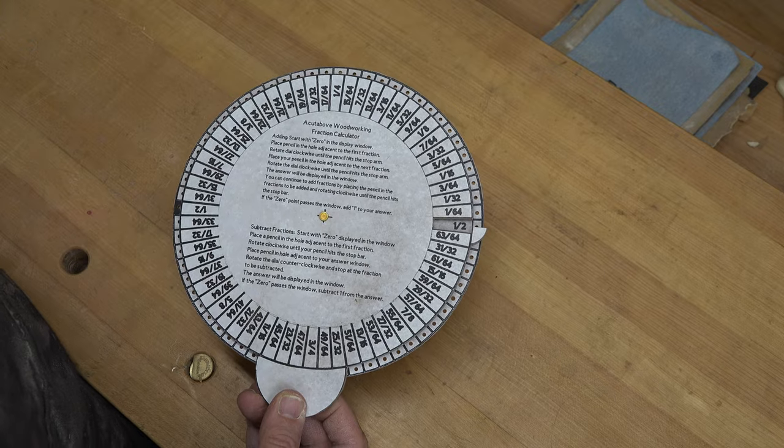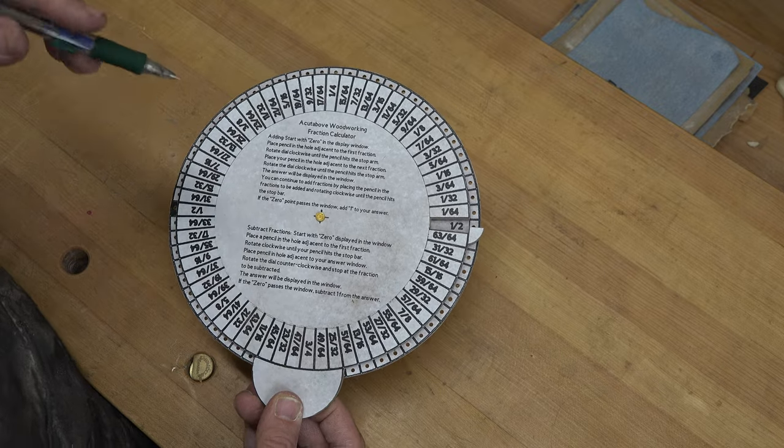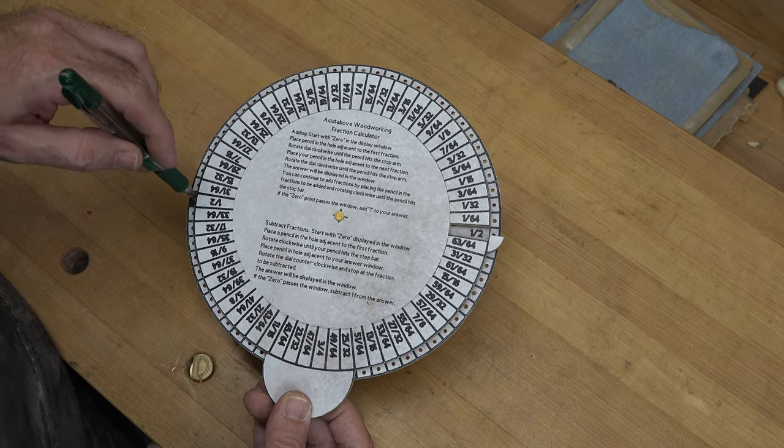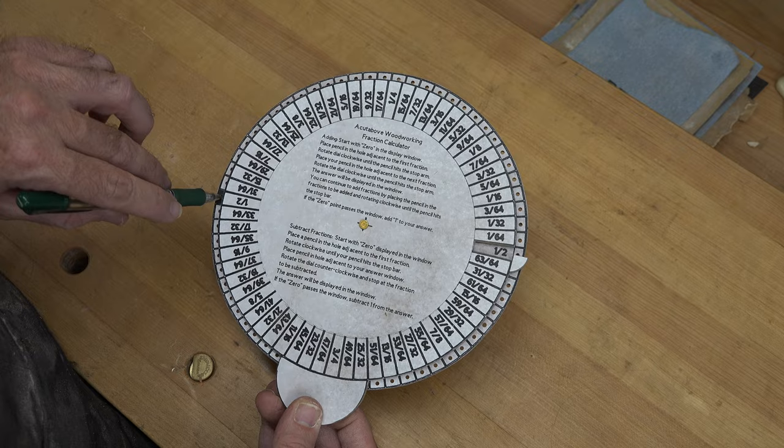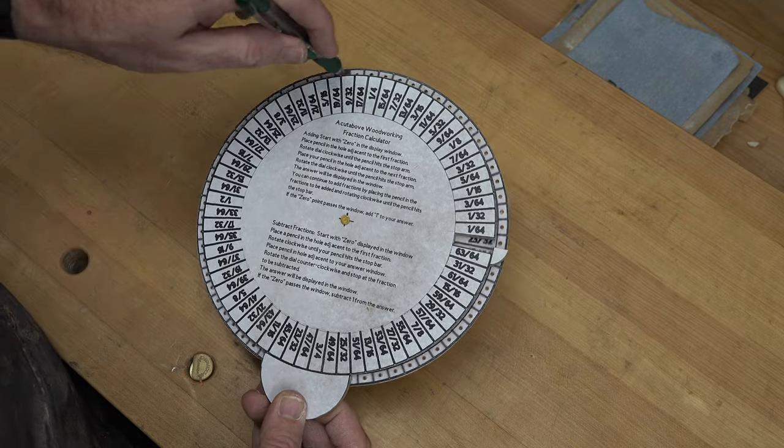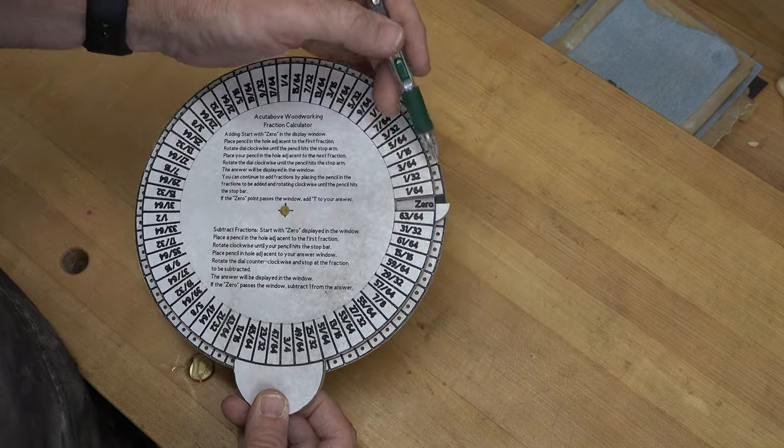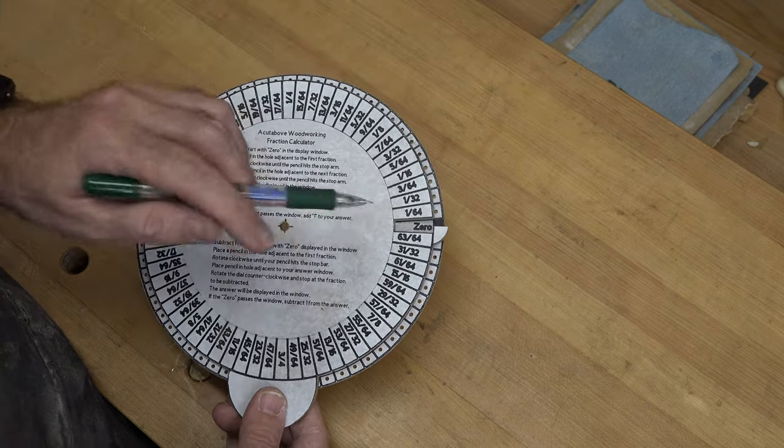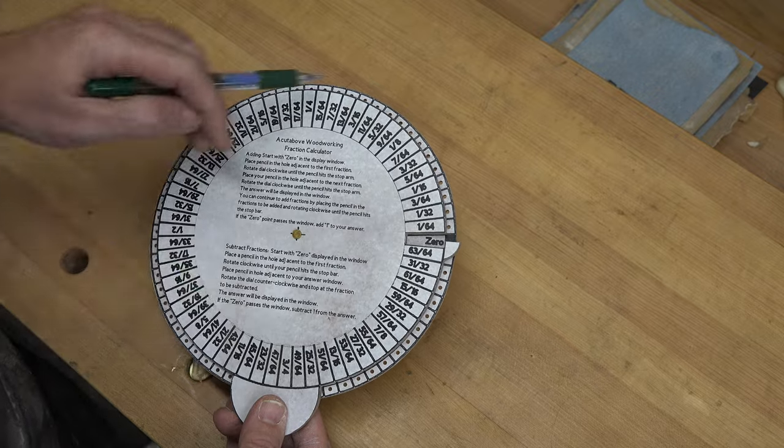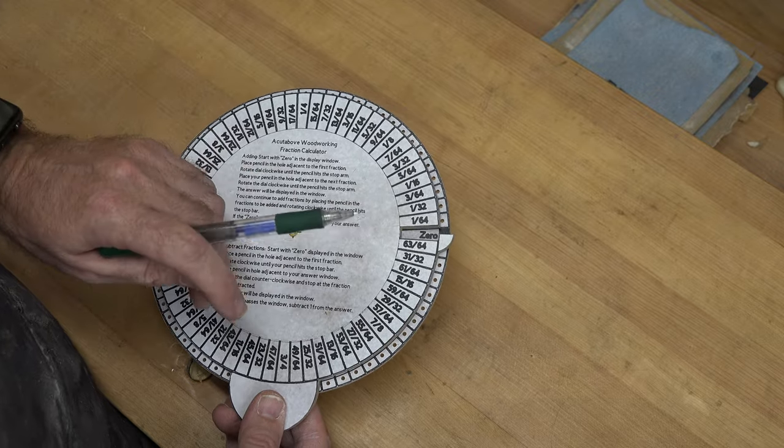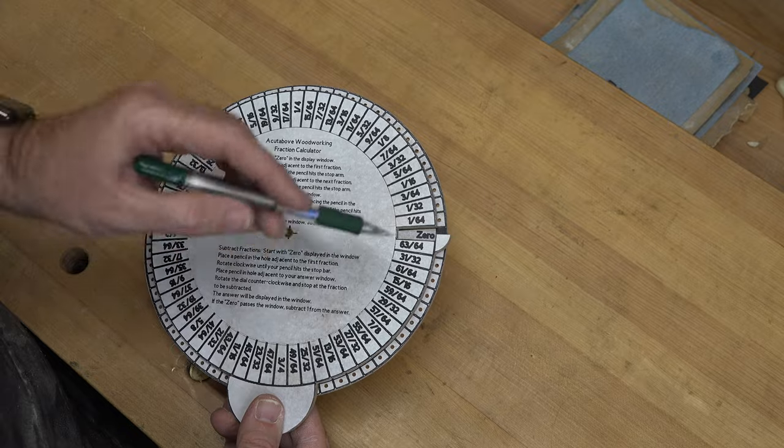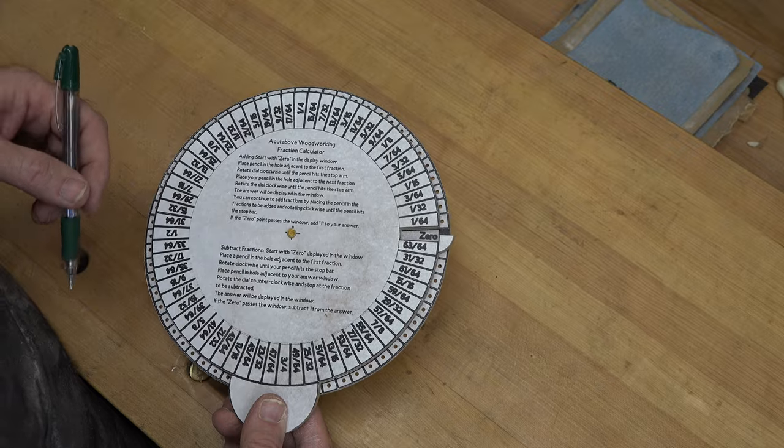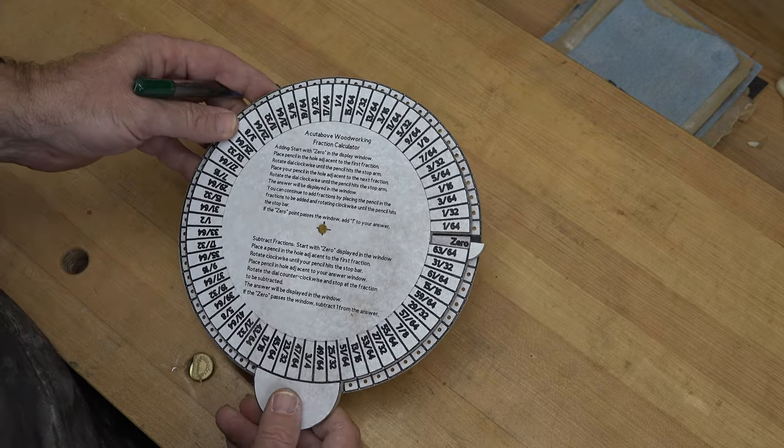But what if we add another half? Well this is where you have to keep things in mind. Because we know that 1/2 plus 1/2 equals 1. So we'll put our pencil adjacent to our 1/2 inch and spin it around and we'll look. And our dark spot has now come around and reached our stop. Every single time that dark spot comes around or passes that, we have to add 1 to our answer. So here, because it has come to the stop, 1/2 plus 1/2 is 1 inch. And that is how you do it.